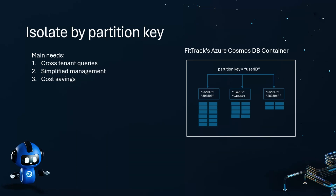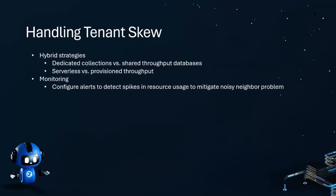Keep in mind that we may run into the noisy neighbor problem if one or a few users are more active than others. If that is the case, we can move that user to its own container or database and provision dedicated throughput for that user. In general, when we see tenant skew — meaning one tenant is more active and requires more throughput than others — we can utilize a hybrid strategy with dedicated collections per tenant. We can also make use of billing models like serverless where we are billed for consumption for smaller tenants. It's important to use Azure Monitor to configure alerts to detect spikes in resource usage and prevent tenant skew.